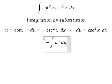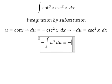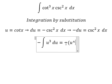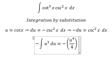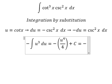The integration of this one, we have negative u to the power of 4 over 4, and we put c. For u, that's cotangent x.